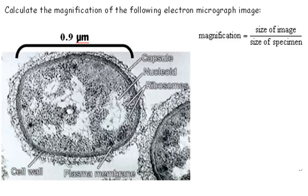Here's the whole formula written out: the magnification is equal to the size of the image divided by the size of the specimen. I like to shorten that by just doing something like this - M I A - putting a little triangle in there.